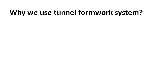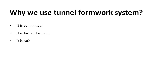Why we use Tunnel Formwork System? It is Economical — Tunnel Formwork System is economical for large construction of multiple similar modular units. It is Fast and Reliable — Tunnel Formwork requires less slab cycle time, due to which construction becomes fast and reliable. It is Safe — construction of box type structure is safe against horizontal forces like earthquake and cyclone. It provides High Quality — Tunnel Formwork gives high quality finishing, due to which we do not need any type of plastering work.